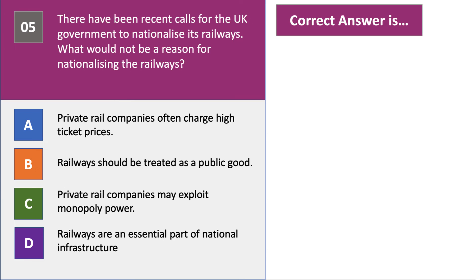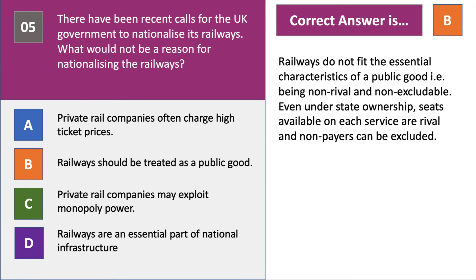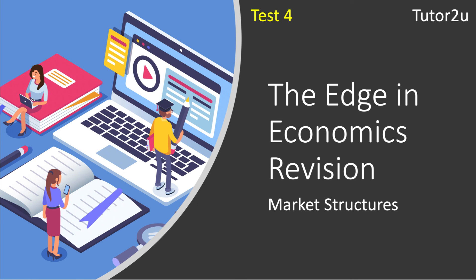The right answer is B. Options A, C and D are in part good justifications for considering state ownership — prices charged by monopolies, keeping essential infrastructure in state control. B is correct because the railways are not a public good. Public goods are non-rival and non-excludable. If I buy a ticket for a railway service, that takes a seat from somebody else, so seats are rival. And in theory, free riders — people not willing to pay — aren't able to travel, so rail services are excludable. Therefore railways should not be treated as a public good. A quick five-question blast on market structures.